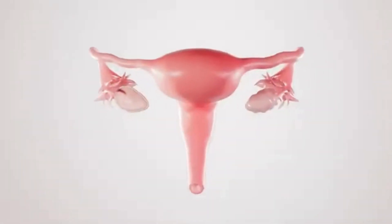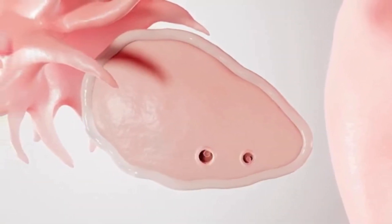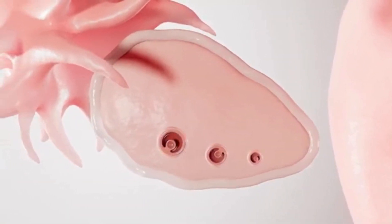After menstruation concludes, the next phase is the follicular phase. During this phase, one or more eggs in your ovary will mature. This maturation process is vital to the success of your IUI procedure.